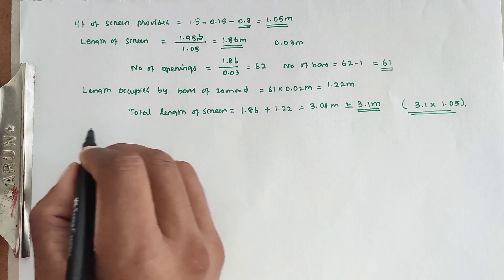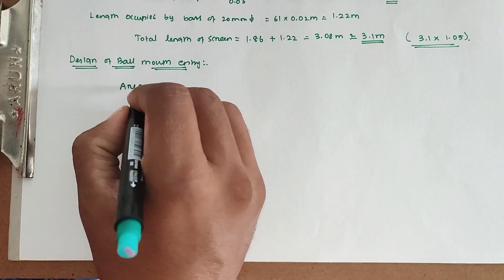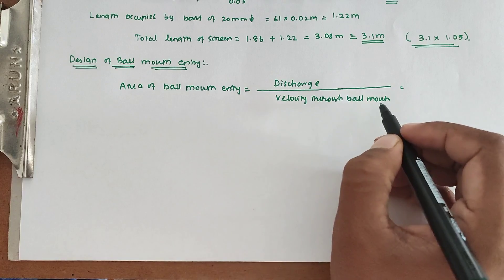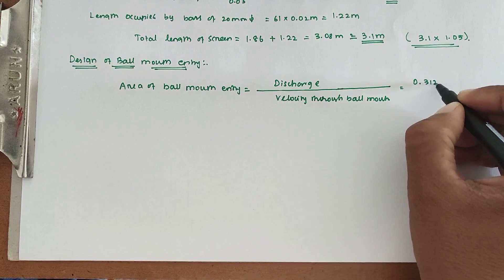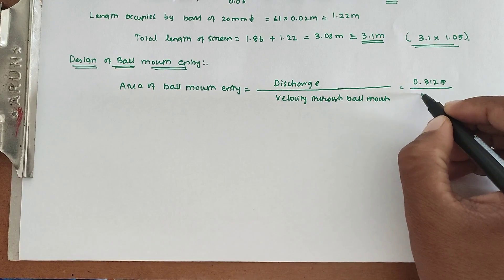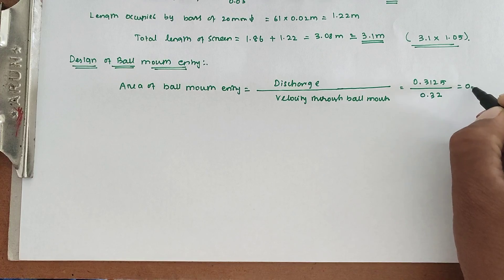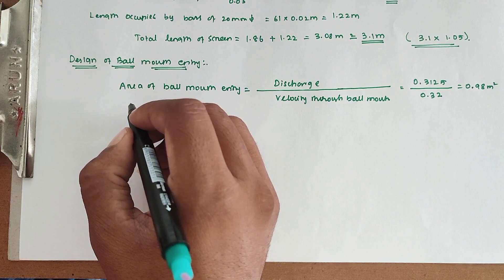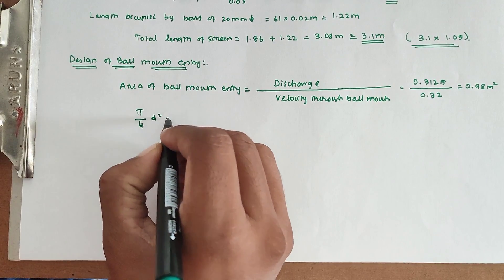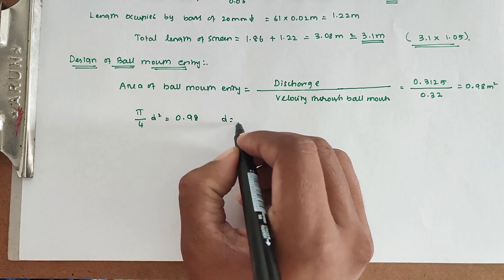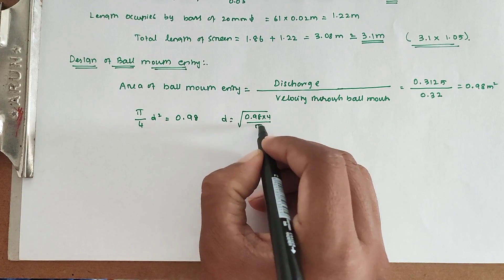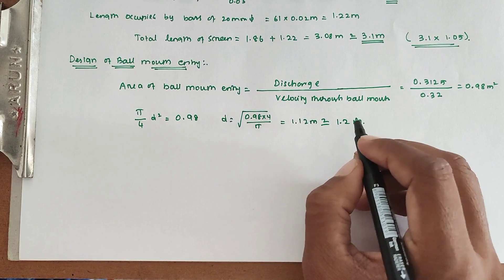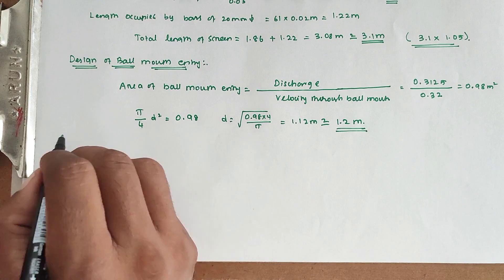Next, design of bell mouth entry. Area of bell mouth entry equals discharge divided by velocity through bell mouth: 0.3125 divided by 0.32 equals 0.98 m². For the diameter of the bell mouth entry: π/4 × d² = 0.98, so d equals √(0.98 × 4 / π), giving 1.12 m, taken as 1.2 m. This is the diameter of the bell mouth entry.